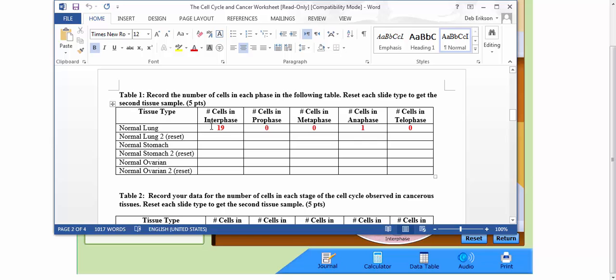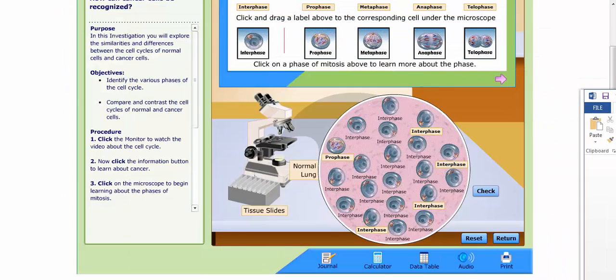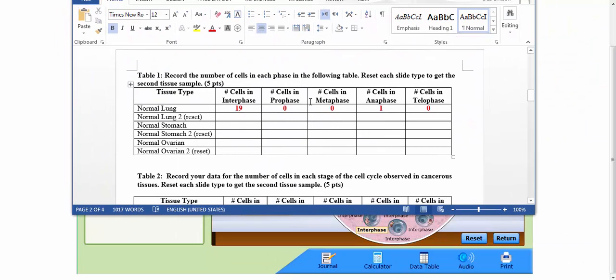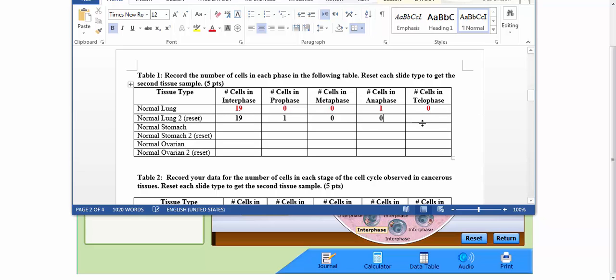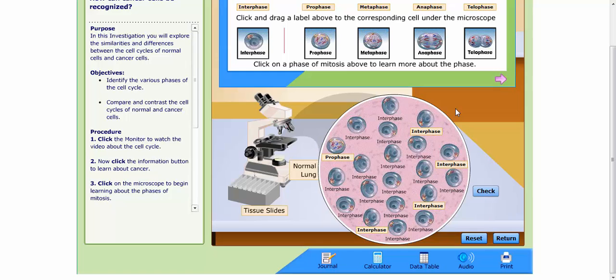So that's what you'll write down in your table. So let's say there's my 19, and in this one, instead of one in anaphase, it would be one in prophase. So I would write 19, one in prophase, so it adds up to 20, and zero, zero, zero. Okay, so that's how you transfer it over.